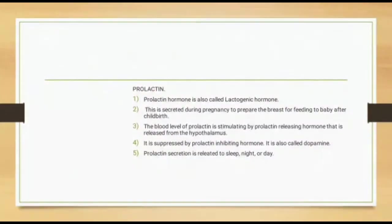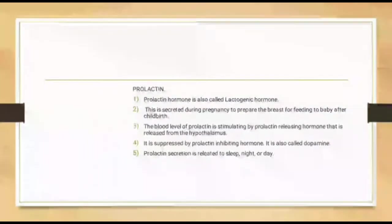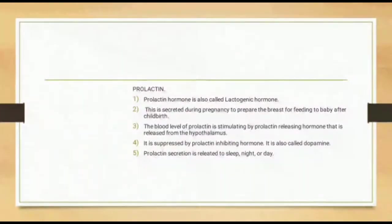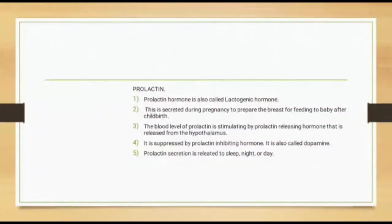Prolactin, also called lactogenic hormone, is secreted during pregnancy to prepare the breast for feeding the baby after childbirth. The blood level of prolactin is stimulated by prolactin releasing hormone released from the hypothalamus, and suppressed by prolactin inhibiting hormone, also called dopamine. Prolactin secretion is related to sleep, whether night or day.